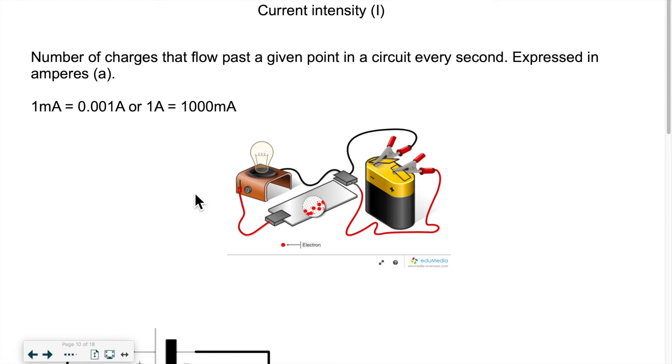Now sometimes the current intensity is very small, so we will use instead milliamperes. Milliamperes is similar in a sense to millimeters. Millimeters is to meters, the same way that milliamperes is to amperes. In one amp, I have a thousand milliamps.